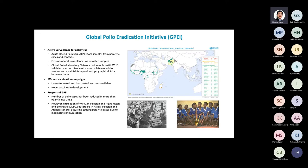There is environmental surveillance which plays a significant role by looking at wastewater samples, and there is a global poliovirus laboratory network of about 140 labs distributed across the world, all using WHO-validated methods to classify viruses as wild or vaccine-derived. This is very important because you want to track where the disease is and to target vaccination campaigns, establishing temporal and geographical links between isolations.